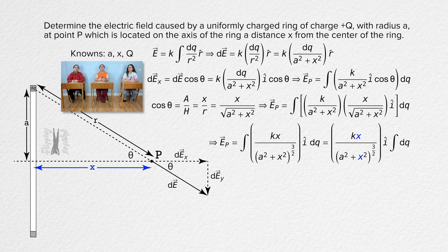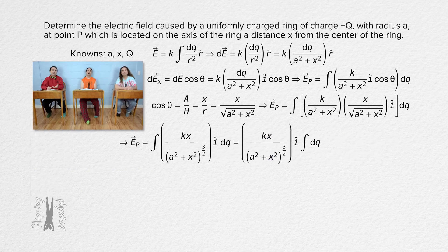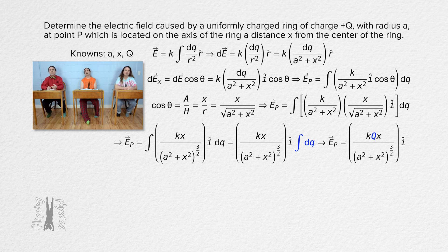x is constant because for every dq on the ring, x has the same value, so it is a constant for the integral. The integral of dq is simply capital Q, the total charge on the ring. We have now solved for the electric field at point P caused by the uniformly charged ring. It equals the Coulomb constant times the charge on the ring times the horizontal distance x to point P, all divided by the quantity a squared plus x squared raised to the three-halves power, all times unit vector i.